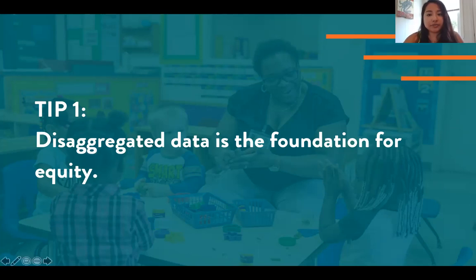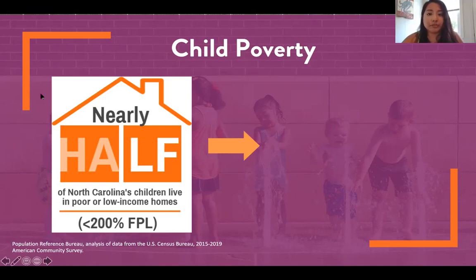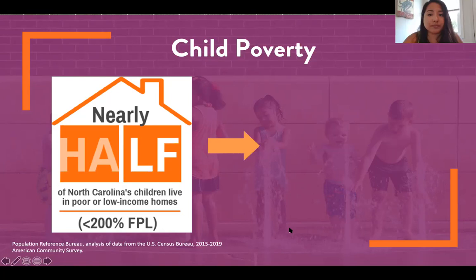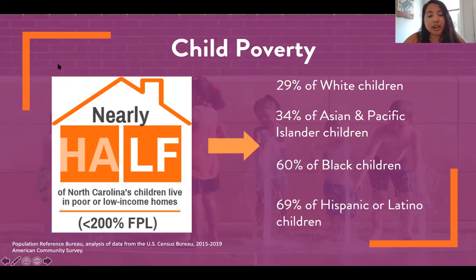A good example is child poverty. Across the state, we know that nearly half of children — or 45% — live in poor or low-income homes, meaning families living at 200% or below the federal poverty level. And while we know that in itself is unacceptable, the data tells us a much more policy-focused story when disaggregated by race. When we look at the data disaggregated by race and ethnicity, we can see that there's a pattern to poverty in our state for kids that gives disproportionately negative outcomes for Black and Latino children.